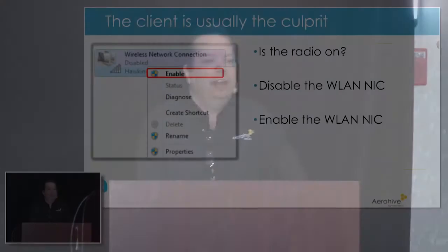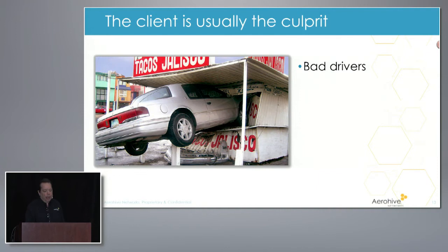Everybody's laughing, but one of the biggest support calls that vendors and MSPs get is layer one — the client's the culprit. It's the same thing as not plugging in the wire. If they don't have the radio on, they're not going to connect. I know this sounds simple, but that's why you start at layer one. I always disable and re-enable the client NIC, whatever the operating system is, just to get the drivers talking to the OS again, because they get confused — and it's amazing how that'll just solve problems sometimes.